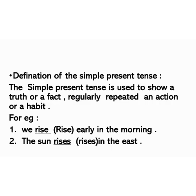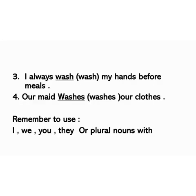Definition of the simple present tense: The simple present tense is used to show a truth or a fact, a regularly repeated action or a habit. For example: 1. We rise early in the morning. 2. The sun rises in the east. 3. I always wash my hands before meals. 4. Our maid washes our clothes.